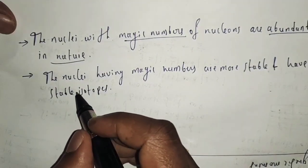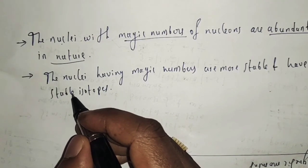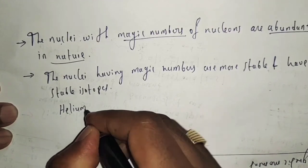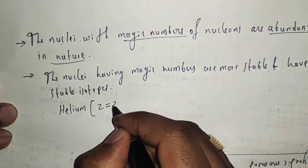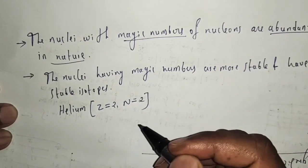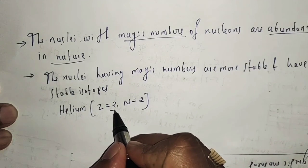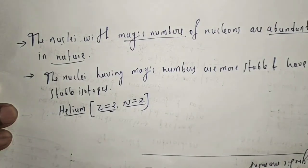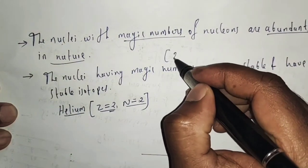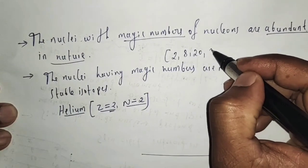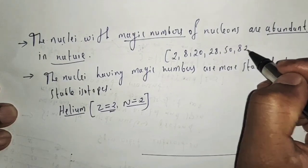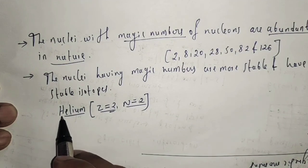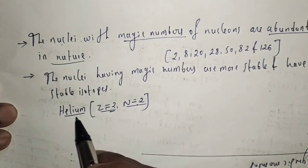Here are some examples of nuclei with magic numbers. The first is helium: it has two protons and two neutrons. Since 2 is a magic number, both the proton number and neutron number are magic, so helium is doubly magic. The magic numbers are 2, 8, 20, 28, 50, 82, and 126. Oxygen also has eight protons and eight neutrons, so it is also doubly magic.